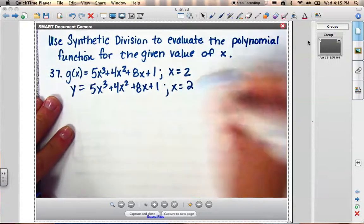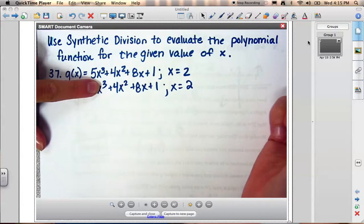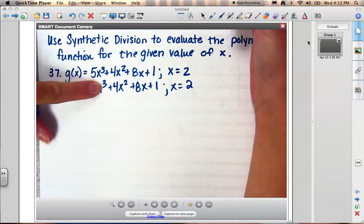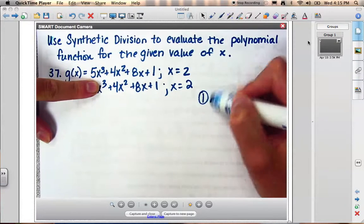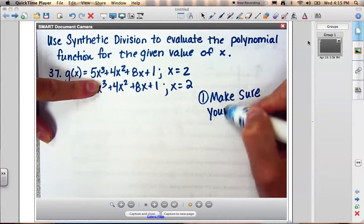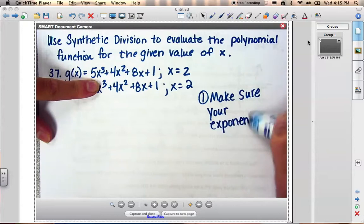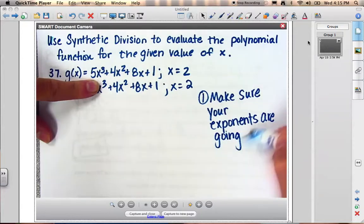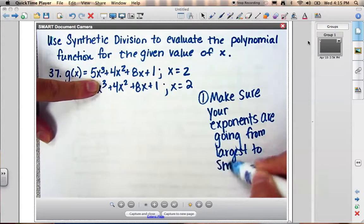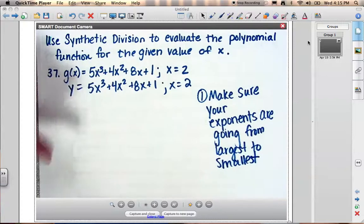I'm going to evaluate at 2. So the first thing I'm going to do is evaluate these degrees. So my degrees, or my exponents excuse me, the degree of this polynomial function is 3 because it's the highest exponent. But my exponents have to go in descending order. So the first step you want to do here is make sure your exponents are going from largest to smallest.